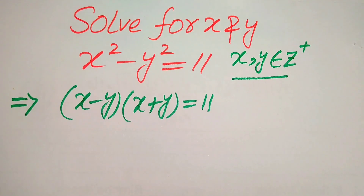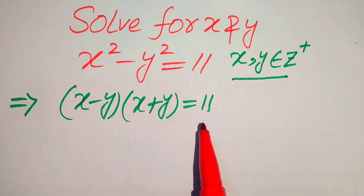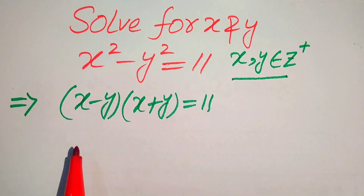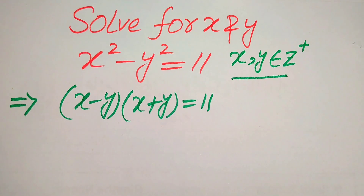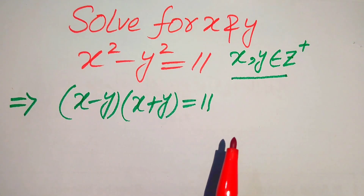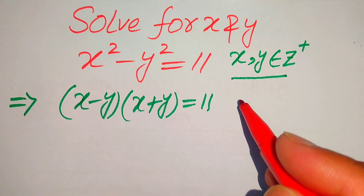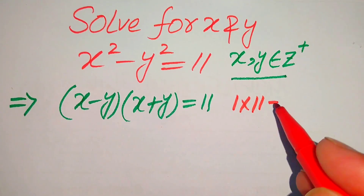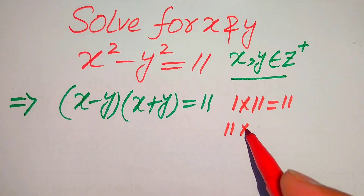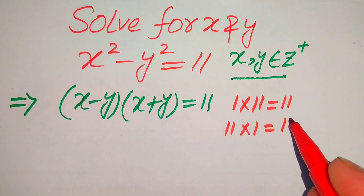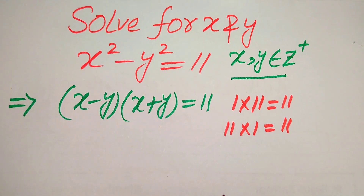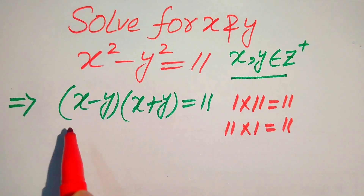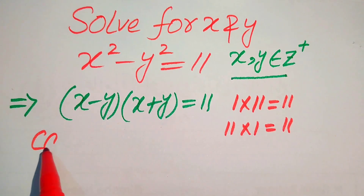We need to focus on the right-hand side. We have 11 on the right, and on the left we have 2 factors multiplied by each other. So we need to find any 2 positive integers whose product is 11. The possibilities are 1 times 11 equals 11, and 11 times 1 also equals 11. So there are 2 possible cases in which we get the answer 11, and we divide this equation into 2 cases.